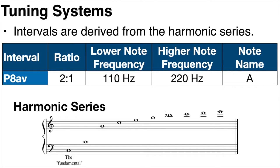In previous videos, we saw that we can derive all our intervals from the harmonic series. It provides us with the true, or just, interval ratios for each interval. And we saw that the most consonant interval, the second harmonic, is that of an octave, which has a frequency ratio of 2 to 1. For example, if our note has a frequency of 110 Hz, then the note an octave higher will be 220 Hz. These two notes are so consonant that they actually sound like the same note, which is why we give them the same name — in this case, the name A.